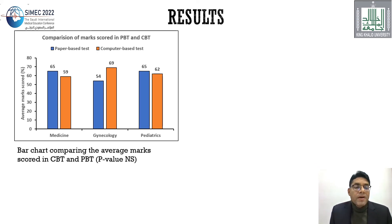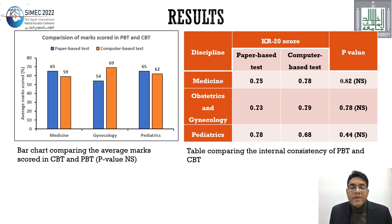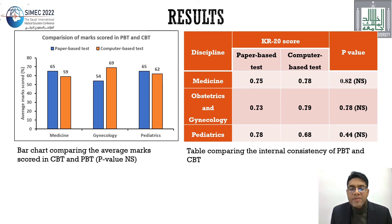Coming on to the results, as we can see in this bar chart, there was no difference in the marks obtained by the students in medicine and pediatrics. Although there was some difference in the marks in gynecology, this change was not statistically significant. This is a very important table which tells us about the reliability of both tests. The paper-based test and the computer-based test had almost similar reliability, with KR20 scores of 0.75 and 0.78 in the case of medicine. Similarly in Obs and Gynae, there was a slight difference in pediatrics but it was not significant.